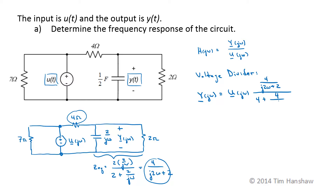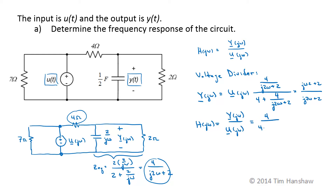If I multiply top and bottom by j omega, Z_EQ becomes 4 over j2 omega plus 2. The denominator of the voltage divider is 4 plus 4 over j2 omega plus 2. Multiplying top and bottom by j2 omega plus 2 and dividing out U of j omega gives H of j omega equals Y of j omega over U of j omega, which simplifies to 4 over j8 omega plus 12.